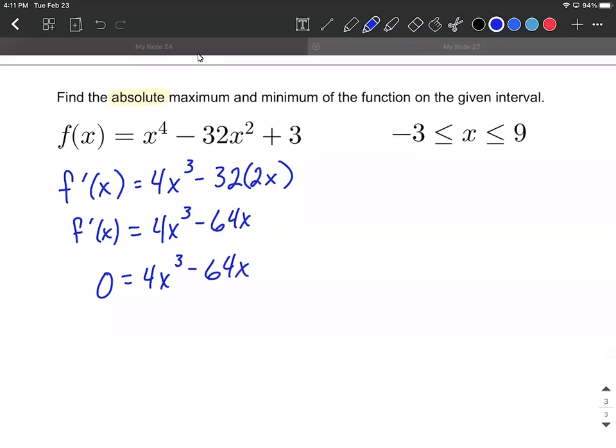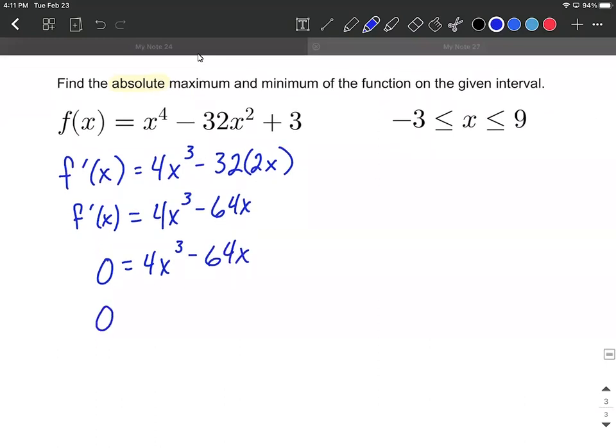So in doing this, I think we can do a little bit of factoring to get us started. We have a common factor of 4 and x. So that'll leave us with x squared minus 16 inside our set of parentheses. And then we can factor a little bit further. We have a difference of squares inside the set of parentheses. So we can say 4x times x plus 4 times x minus 4.